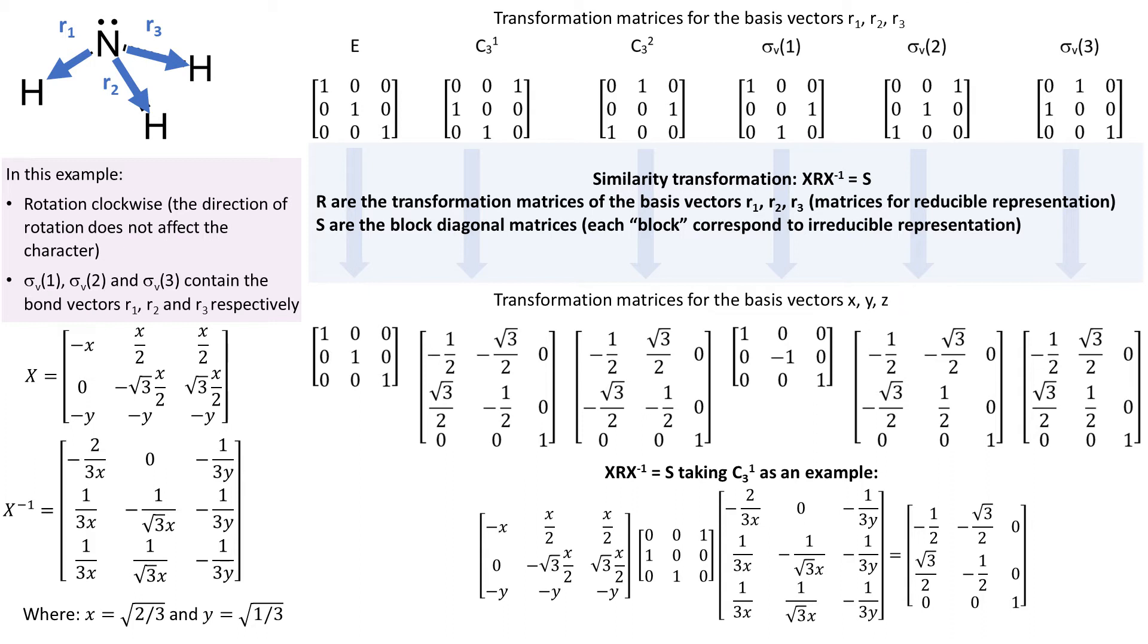And more generally, for any reducible representation, we can find some matrix X and X inverse, which transform such a set of matrices into block diagonal matrices, where each block corresponds to irreducible representation.